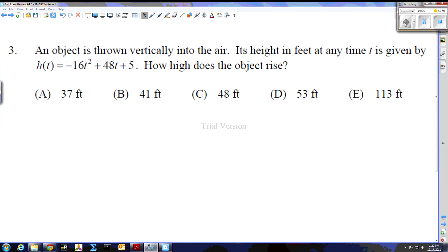An object is thrown vertically, its height in feet is given by this specific function. How high does the object rise? When we see that, we should think max, so we're looking for a maximum. How do we find the maximum of a function? We're going to find the derivative of that function and set it equal to 0.